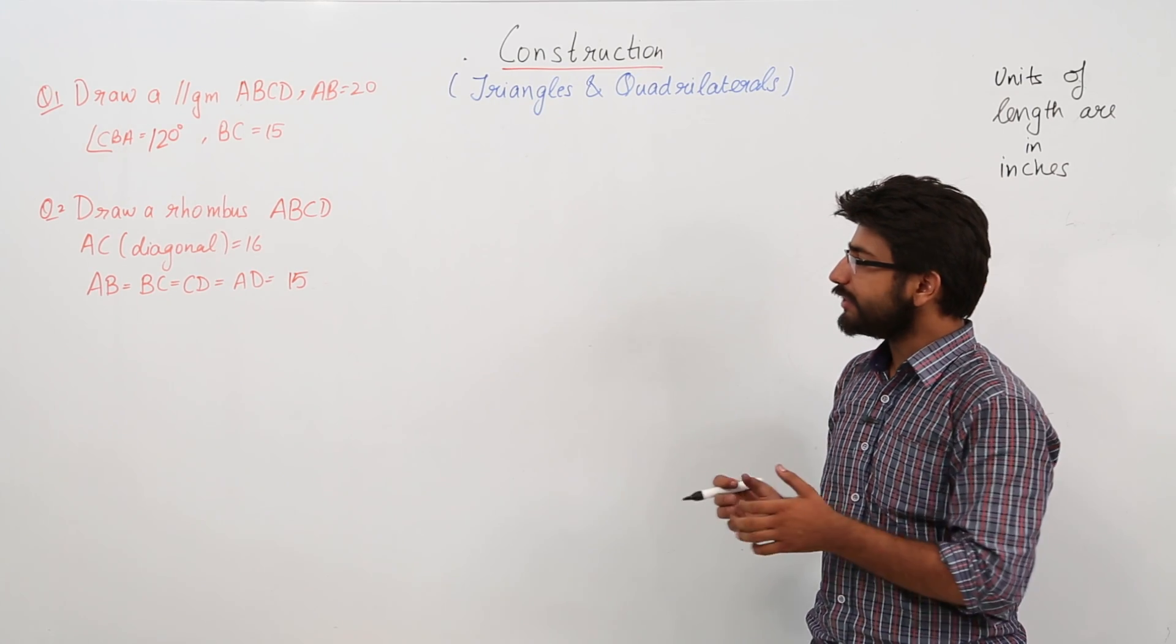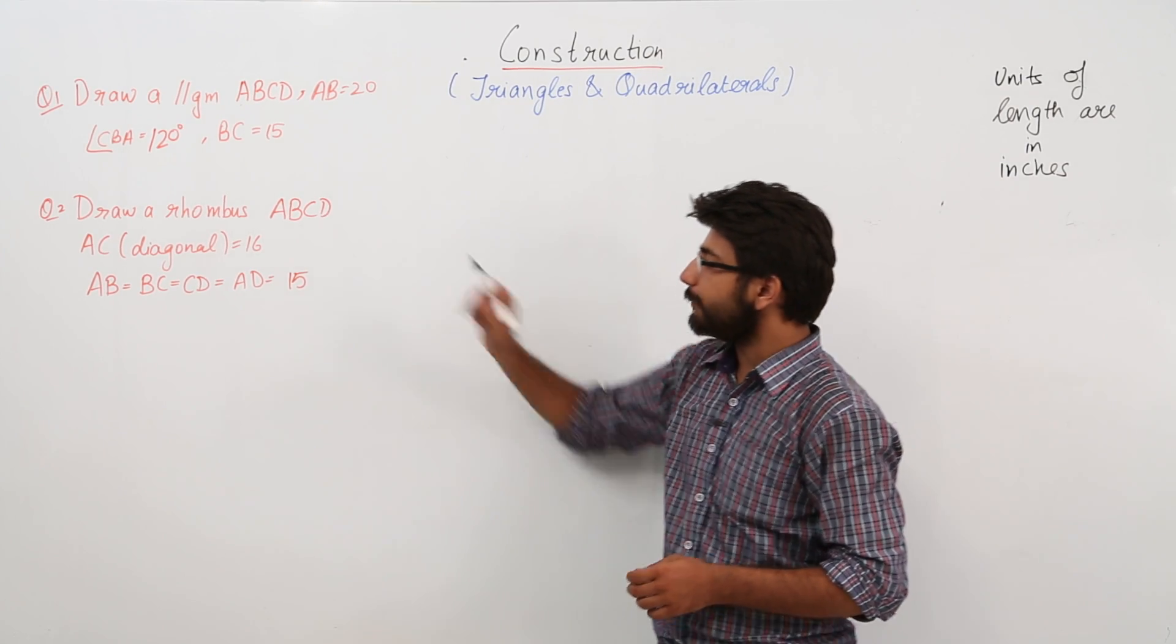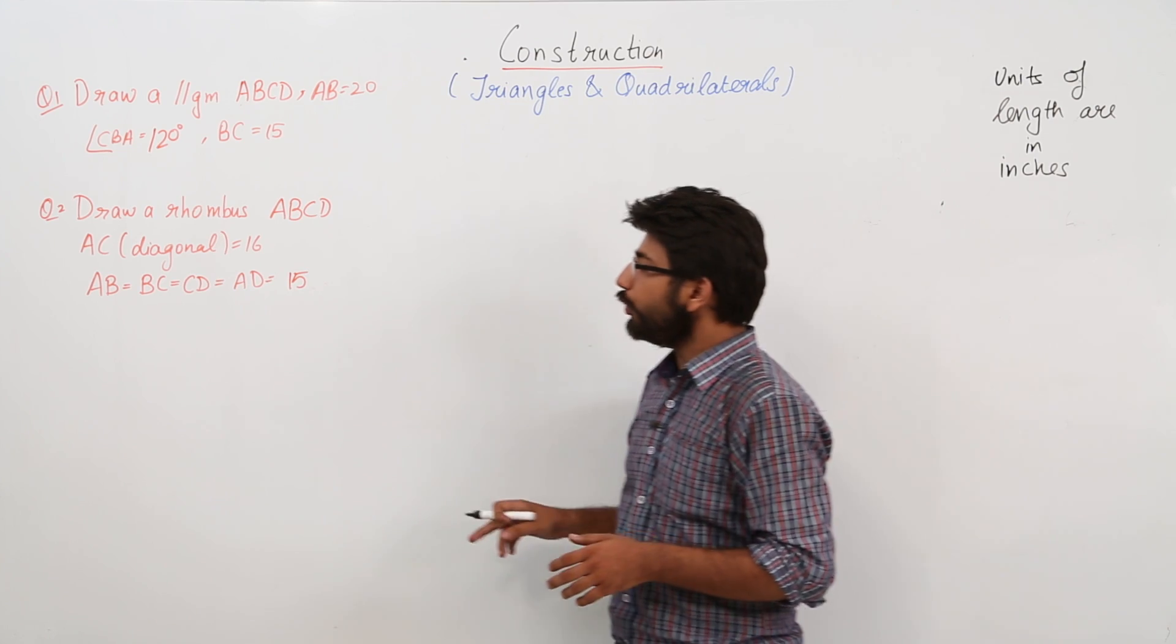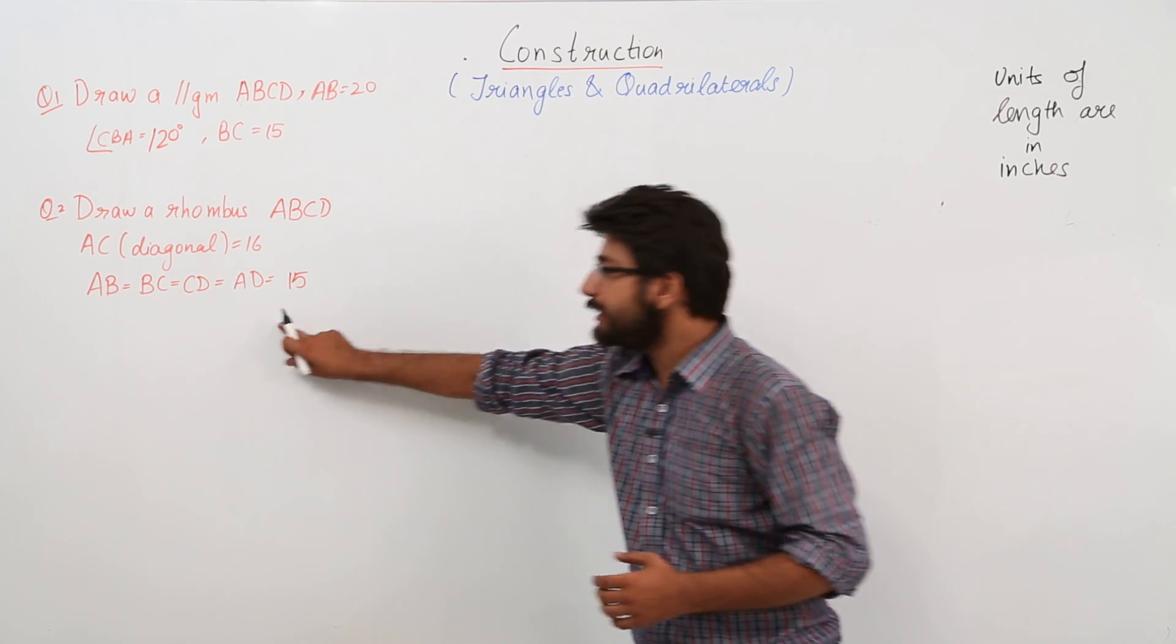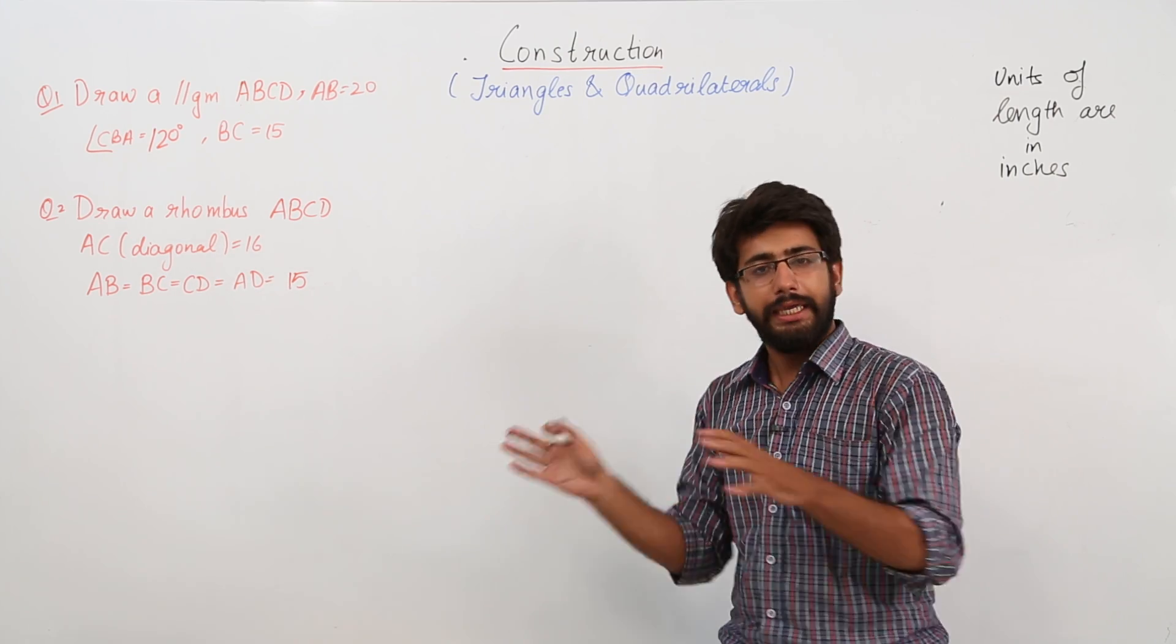Now question number two: in this we have to construct the rhombus ABCD in which we know that the length of the diagonal AC is 16 and the length of these sides is equal to 15 inches.